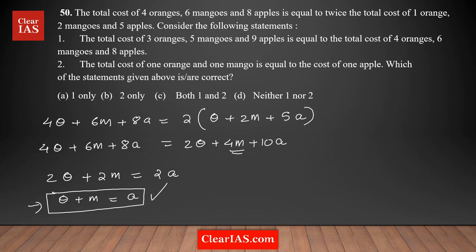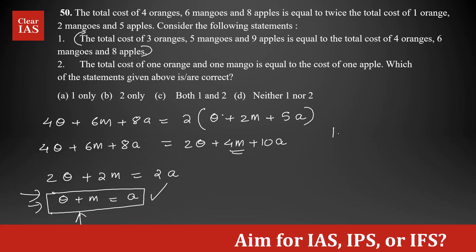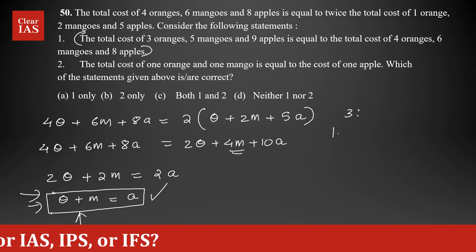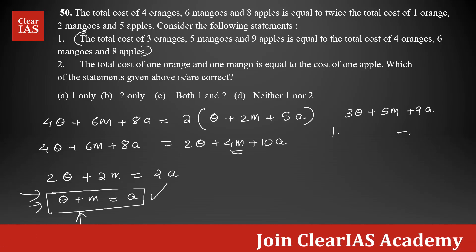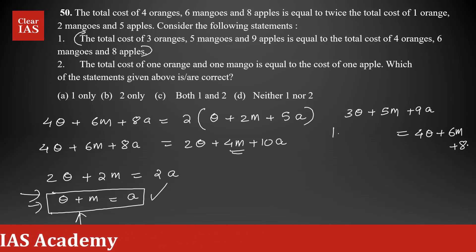Now I have two statements given. For Statement 1, I need to check whether it's true by simplifying its equation and seeing if we get the same condition. I'm taking Statement 1 and forming the equation as it is: the total cost of 3 oranges — 3O plus 5 mangoes — 5M plus 9A is equal to the total cost of 4 oranges plus 6 mangoes plus 8 apples.